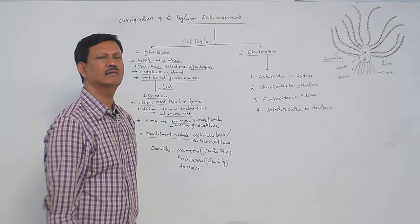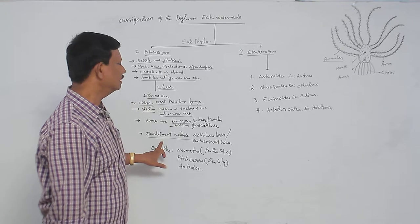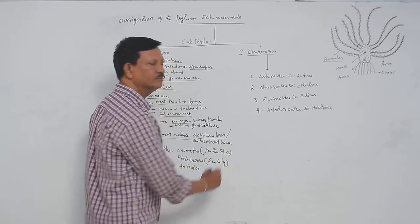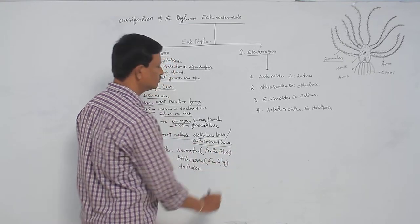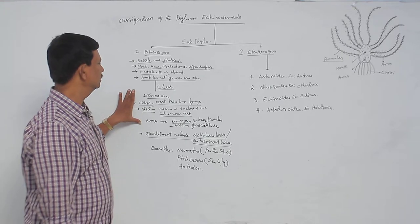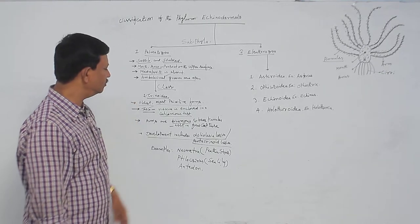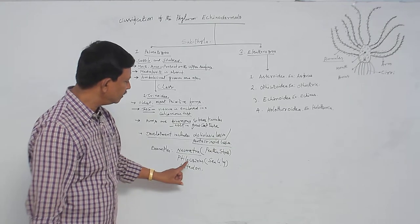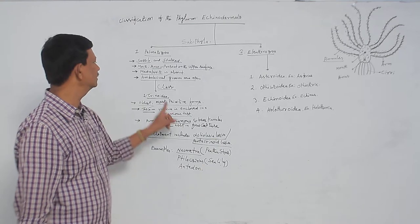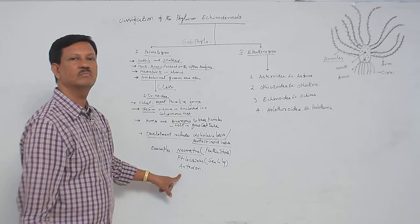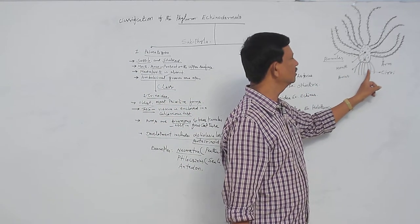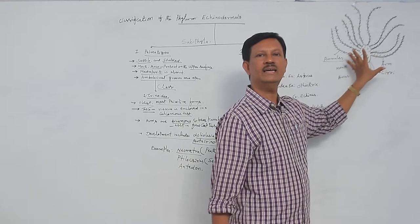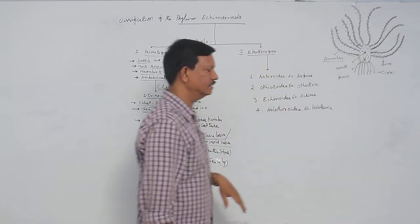Development in Crinoidea is indirect, with larval forms present. Two types of larvae are found: the doliolaria larva, and sometimes the pentacrinoid larva. Examples include Neometra, commonly known as the feather star; Pentacrinus, known as the sea lily; and Antedon, a sedentary animal found in marine water. With the help of its cirri, Antedon is attached to the substratum, and its biramous arms with pinnules make it look like a flower or lily — hence the name sea lily.